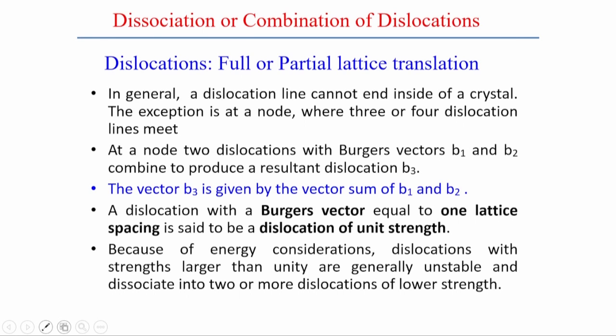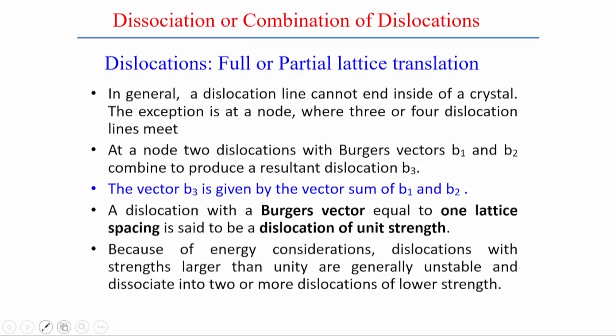A dislocation is a full or partial lattice translation. In edge dislocation, there is a shifting of one plane of atoms, which can be considered a full dislocation and is represented by the Burgers vector. We have not yet discussed partial dissociation, where the displacement of atoms may follow other paths with a change in the energy level of the whole dislocation.